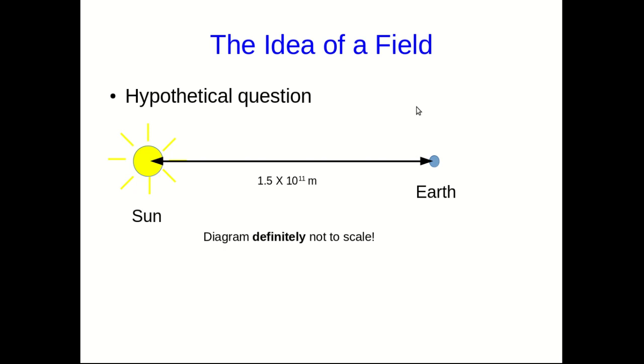Electric fields are an example of a more general idea just called a field, and so the first thing to understand is this idea of what a field is. So here's a hypothetical question. Here's the sun and the earth in a definitely not to scale diagram. And let's suppose that somehow in an experiment that I hope we are never able to carry out, suddenly we make the sun disappear. Poof, it's gone.